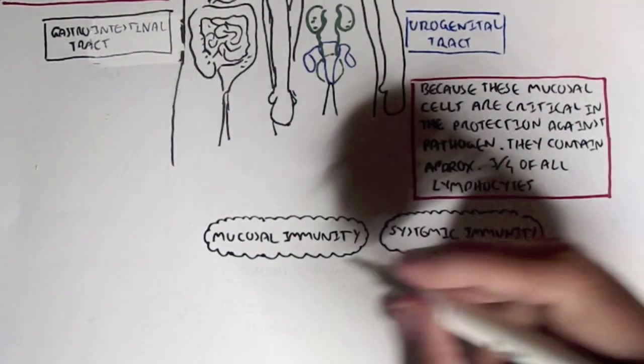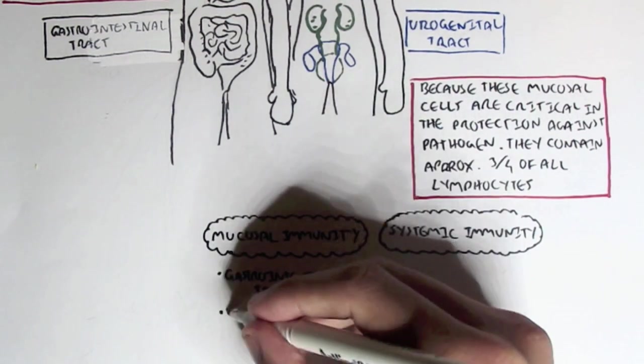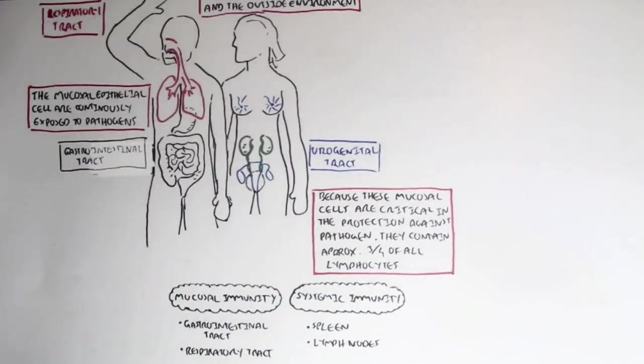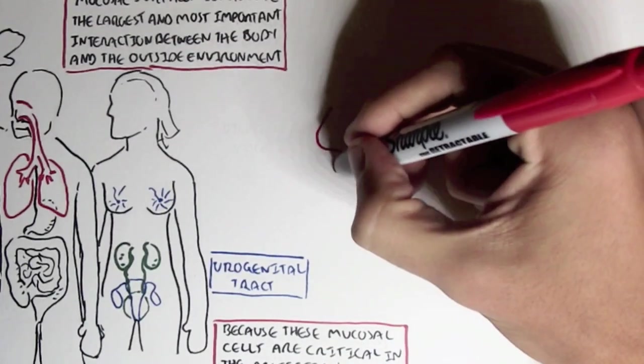The mucosal immunity being the gastrointestinal tract and respiratory tract for example, the systemic immunity being the spleen and the systemic lymph nodes where the blood circulates around the body.